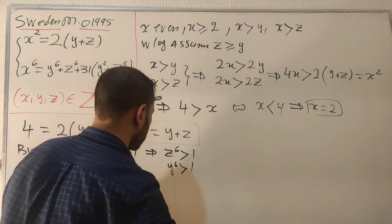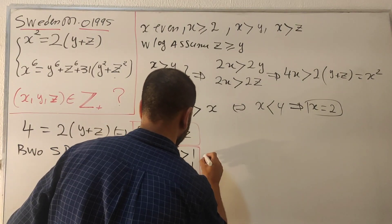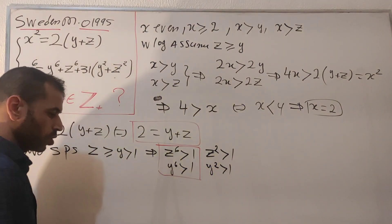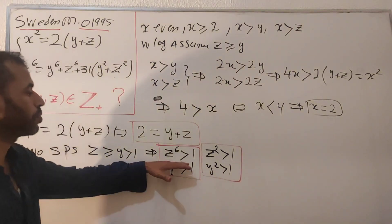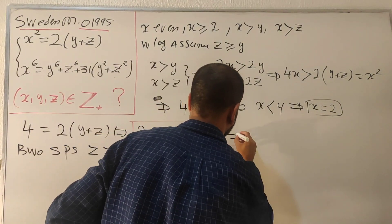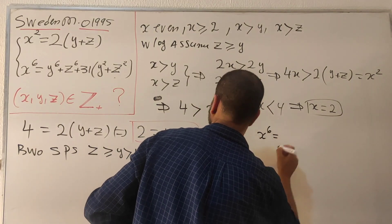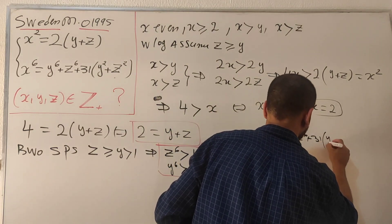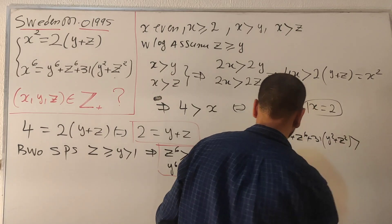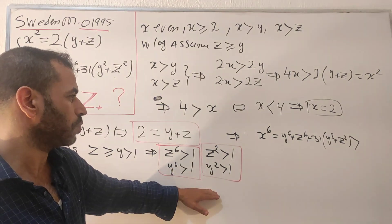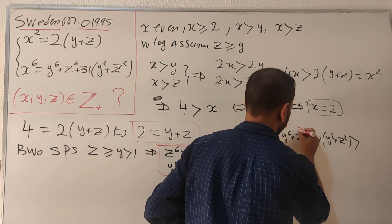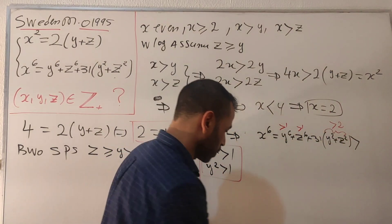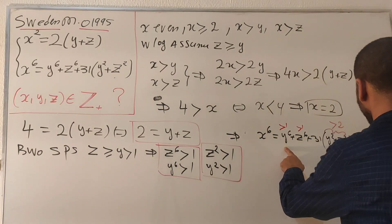We also get z squared strictly greater than 1 and y squared strictly greater than 1. Now summing these facts into the second equation: x to the 6 equals y to the 6 plus z to the 6 plus 31 times (y squared + z squared). Each term is strictly greater than 1, and the sum y to the 6 plus z to the 6 is strictly greater than 2, while 31 times (y squared + z squared) is strictly greater than 62.